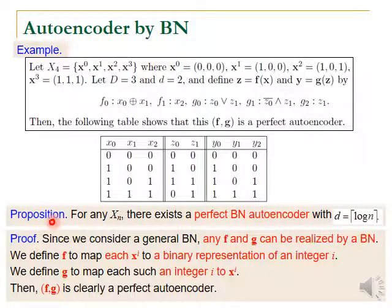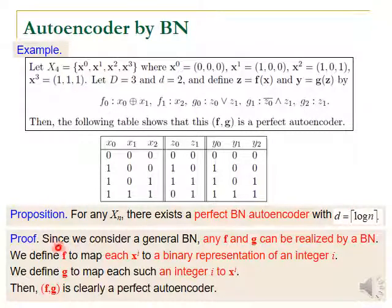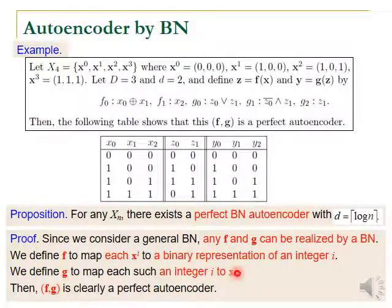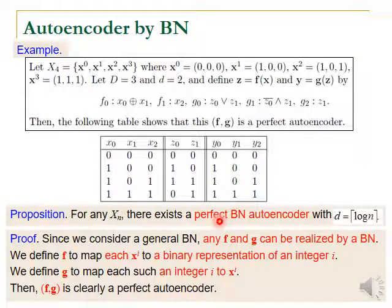We have this proposition: for any set of n binary vectors of any dimension, there exists a perfect Boolean network autoencoder with dimension ceil(log2 n) in the middle layer. The proof is easy: since we consider arbitrary Boolean functions, any f and g can be realized by a Boolean network. We define f to map each input vector x_i to a binary representation of the integer i, and g to map each such integer i back to x_i. Then f, g is clearly a perfect autoencoder.